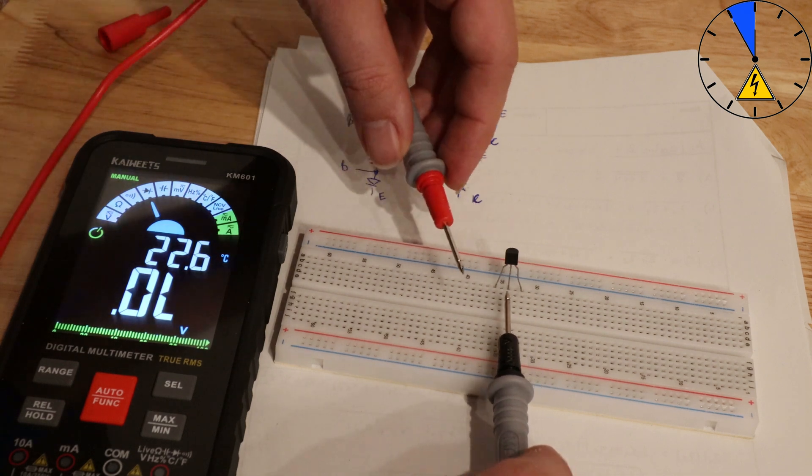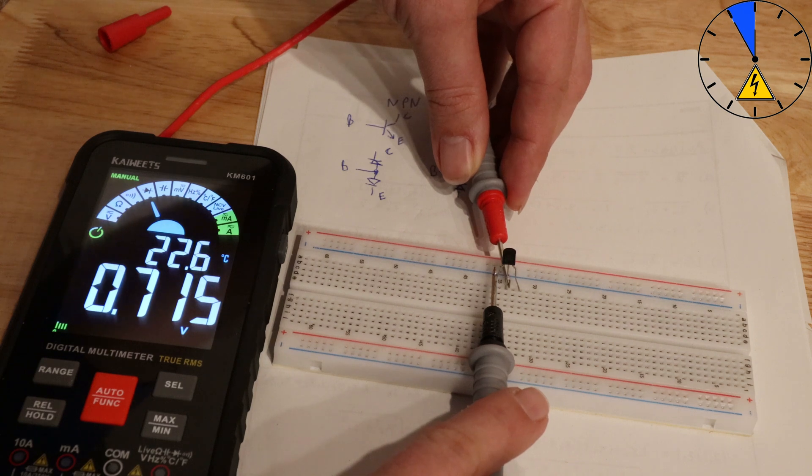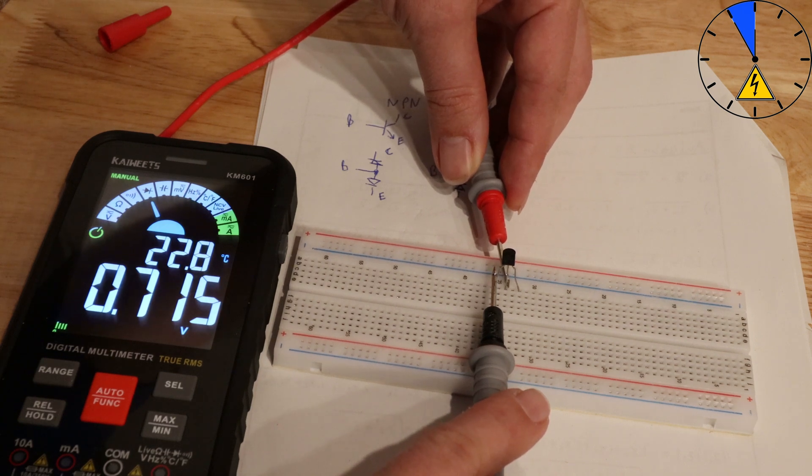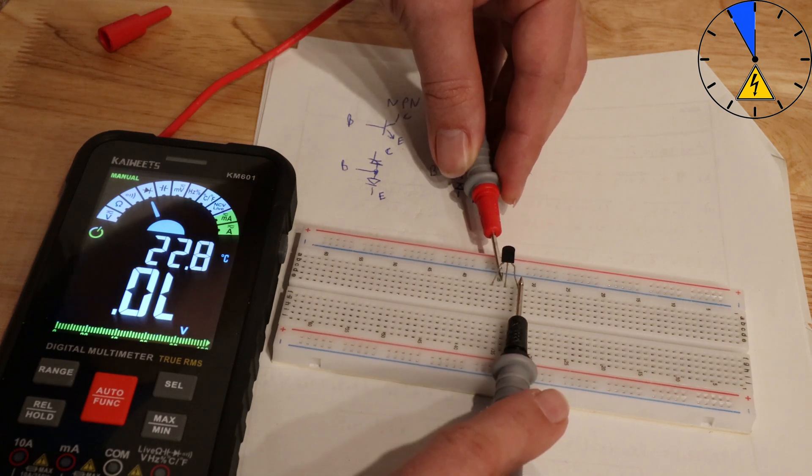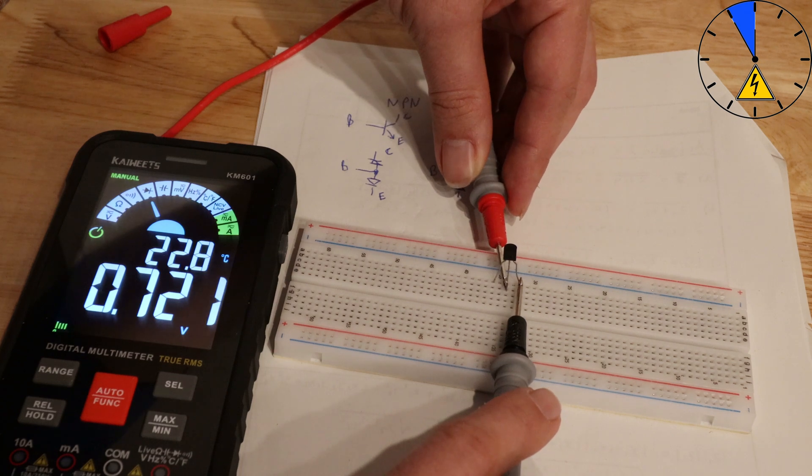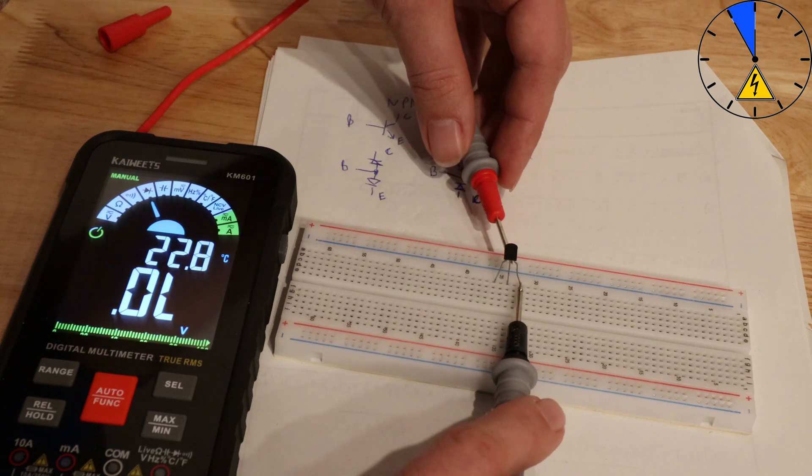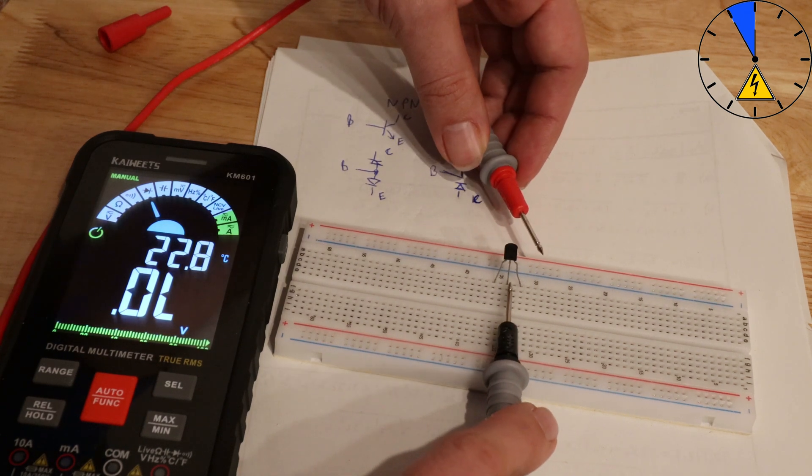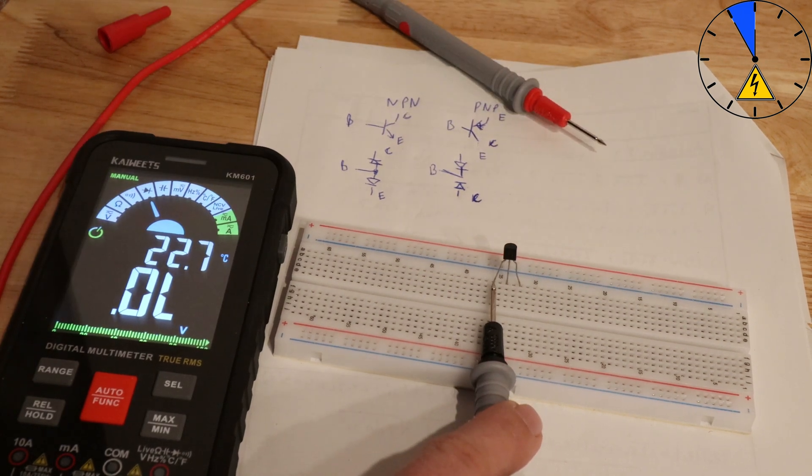This is very easy to find. I have to measure from this to this. And here I have 0.715 and now here it is 0.72, and this value is greater so I know here this pin is the emitter, here this is the base, and here this is the collector.